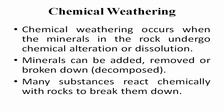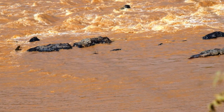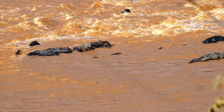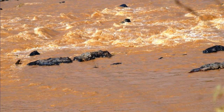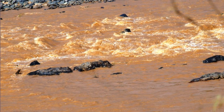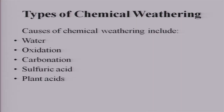Now we come to chemical weathering. In chemical weathering there is a change in chemical composition — this is the most important difference. Changes occur in the mineral composition of the rocks; minerals can be added, removed, or broken down, and many substances can react chemically with rocks to form secondary minerals. The causes of chemical weathering include water, oxidation due to oxygen in the atmosphere, carbonation, sulfuric acid, and plant acids.